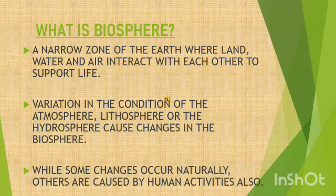Let's move on to the concept of biosphere. What is biosphere? Plant and animal kingdom together make the biosphere — animals, plants, and humans are all part of biosphere. It is a narrow zone of the earth where land, water, and air interact with one another and support the life system of plants, humans, and animals. So altogether, lithosphere, hydrosphere, atmosphere, plus the plant and animal kingdom, they all make up the biosphere.